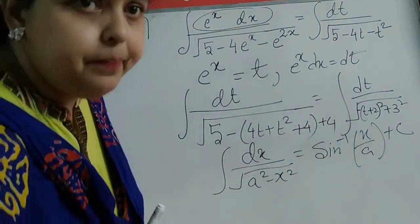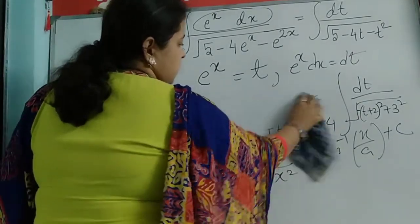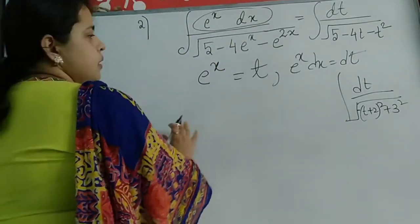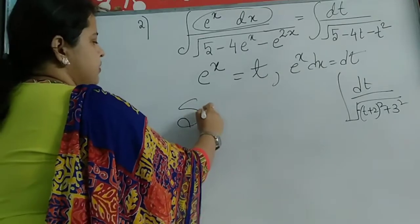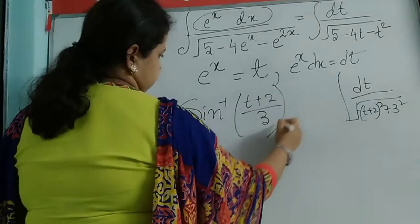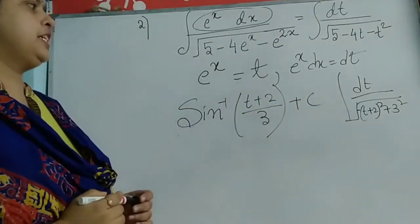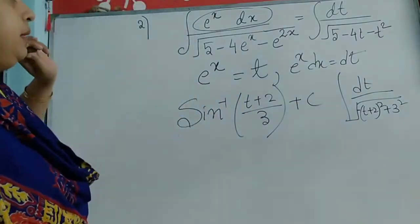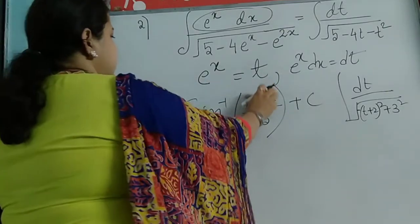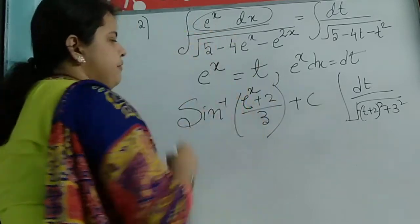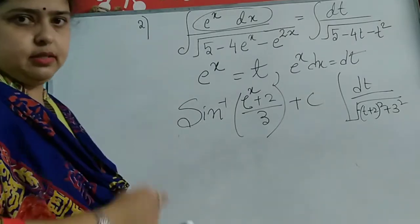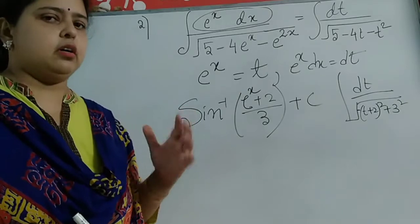This formula reveals: it is of the type √(a² minus x²), giving sin⁻¹(x/a) plus C. Here the x part is (t plus 2) and a = 3. So the final answer by using the formula is sin⁻¹((t plus 2)/3) plus C. The last step is to substitute t = eˣ back.